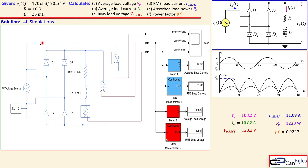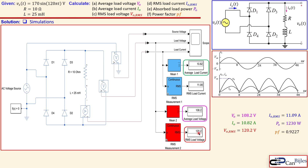Now looking at the Simulink simulation, we have our circuit drawn: the full wave rectifier, the resistor and the inductor, implemented using Simscape elements. The AC source is Vs. A scope displays the load current, the load voltage at the output node, and the source voltage — three plots. The mean block calculates the average value and the RMS block calculates the RMS value. The simulation confirms: average load voltage = 108.2 V, average load current = 10.82 A, RMS load voltage = 120.2 V, and RMS load current = 11.09 A — all matching our calculations.